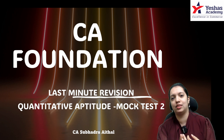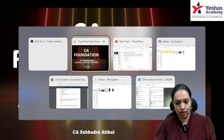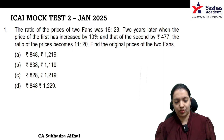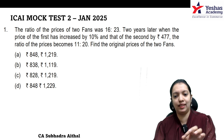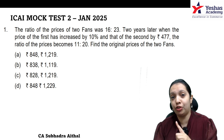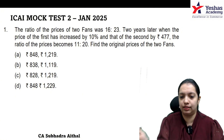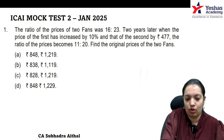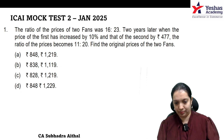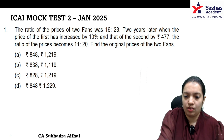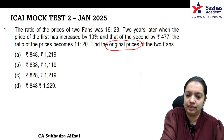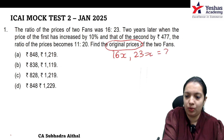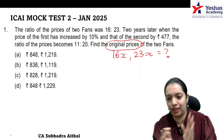Starting with question number one: the ratio of prices of two fans is 16 to 23. After reading the first sentence, jump to the last sentence — find the original price of the two fans. Let us consider the prices as 16x and 23x, so ultimately you have to find 16x and 23x.